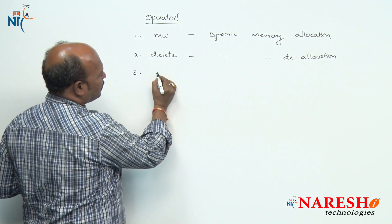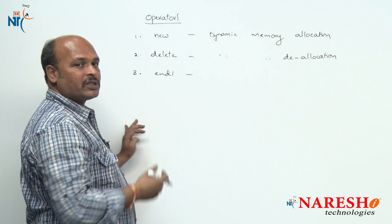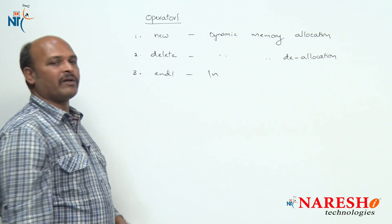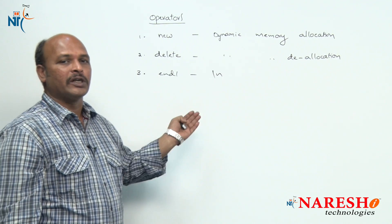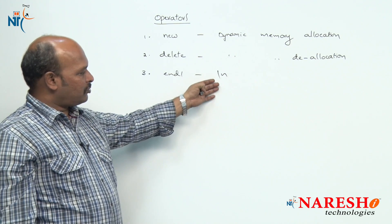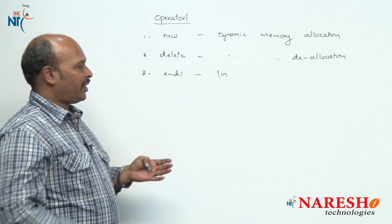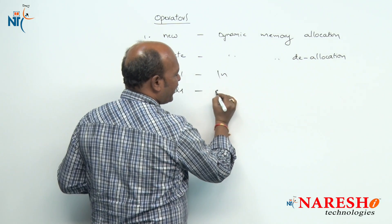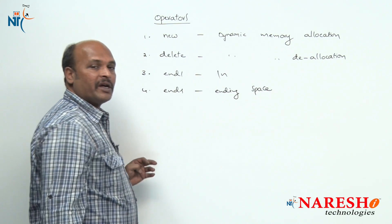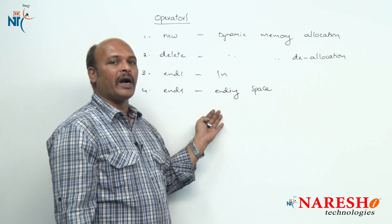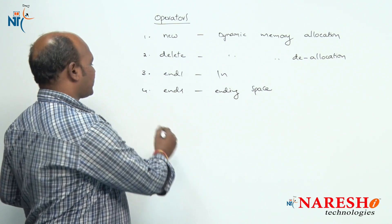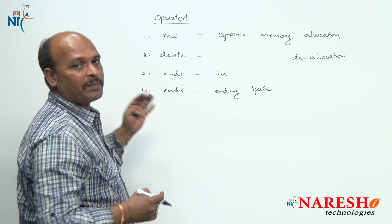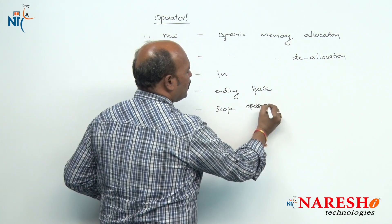The next new operator is 'endl,' which is a manipulator equivalent to '\n' (the newline character). In C we use '\n'; in C++ they introduced 'endl' which causes a new line. Next is 'ends,' which stands for ending space — it adds a space at the end of the line.